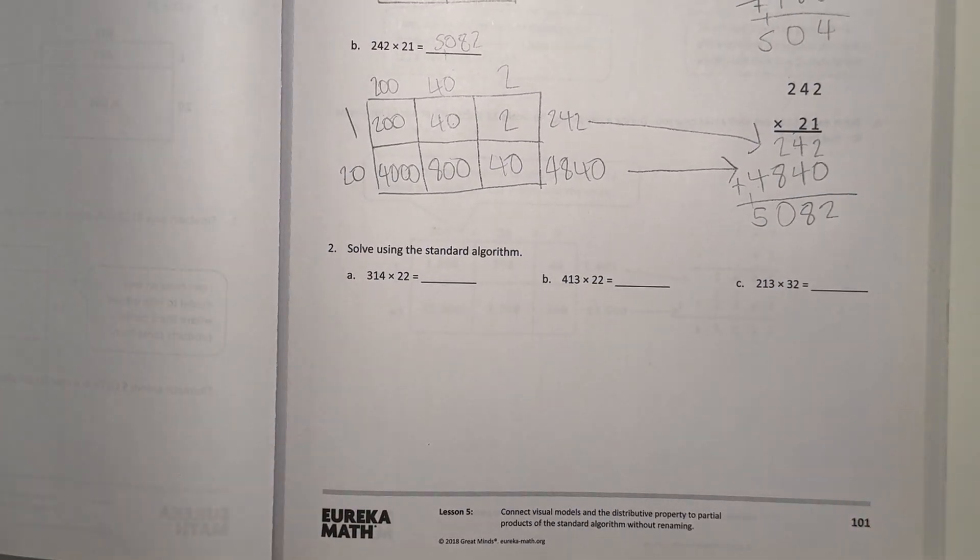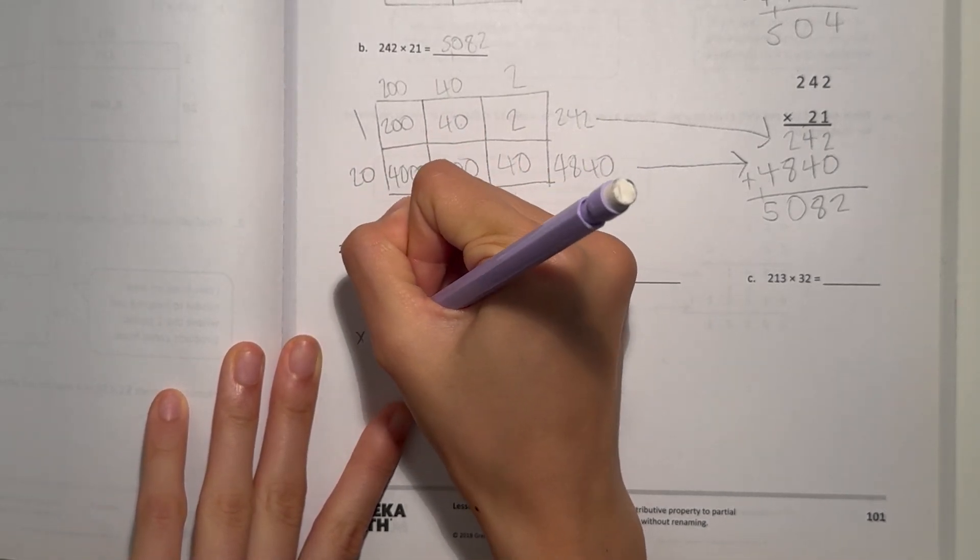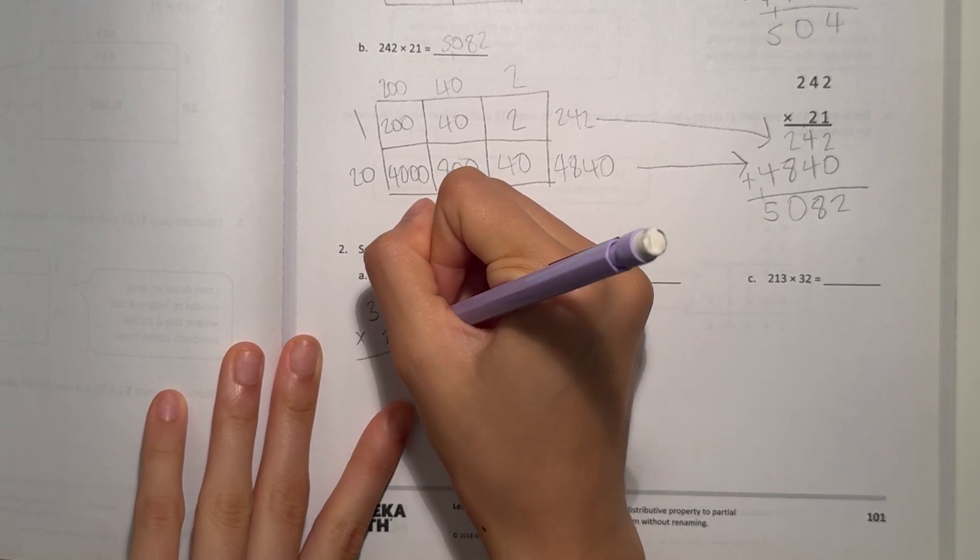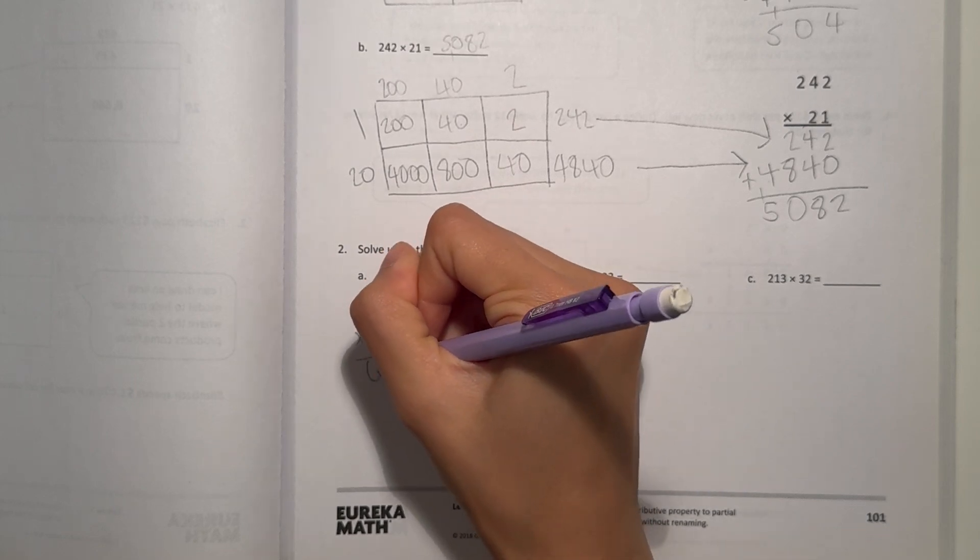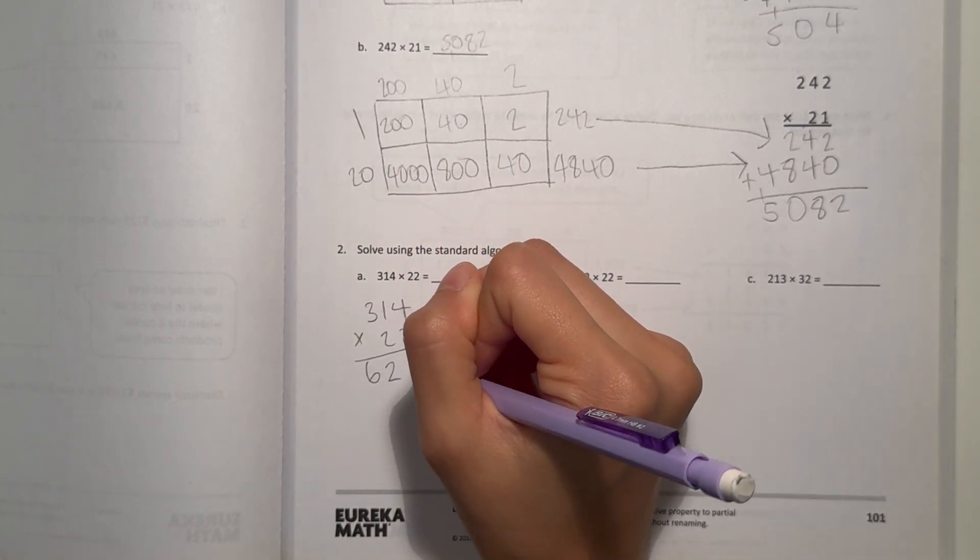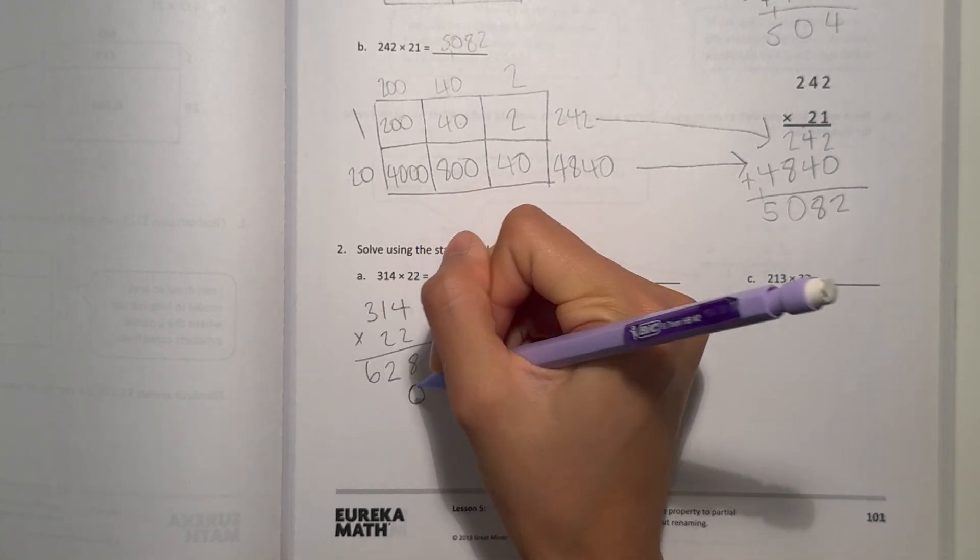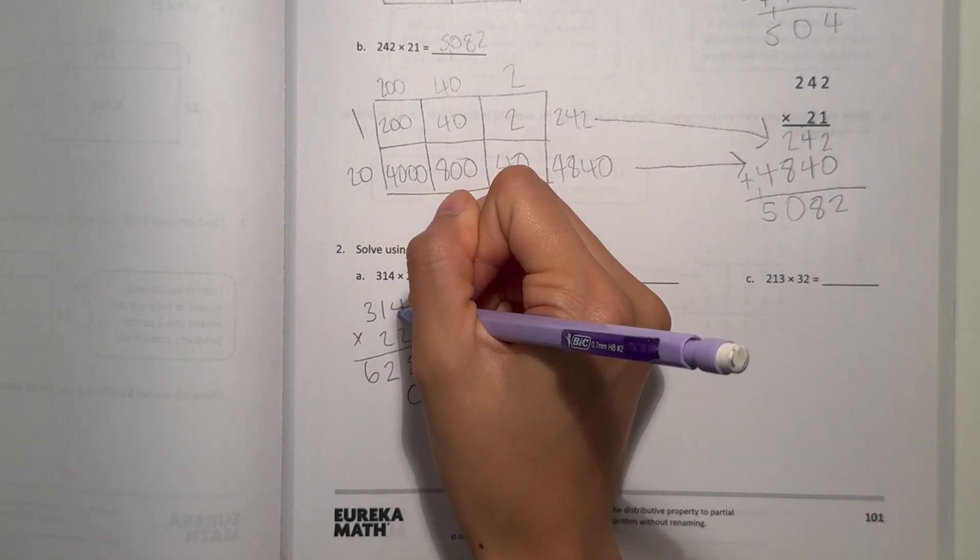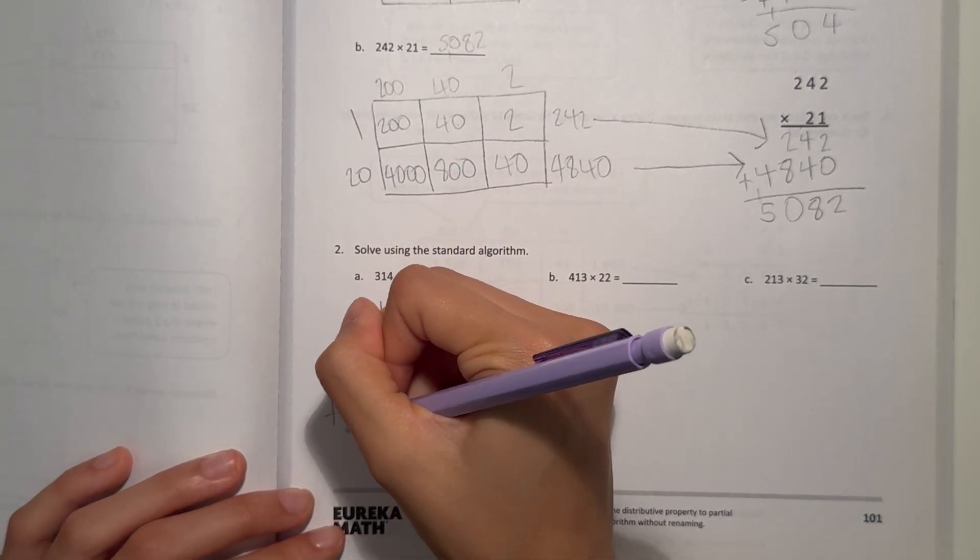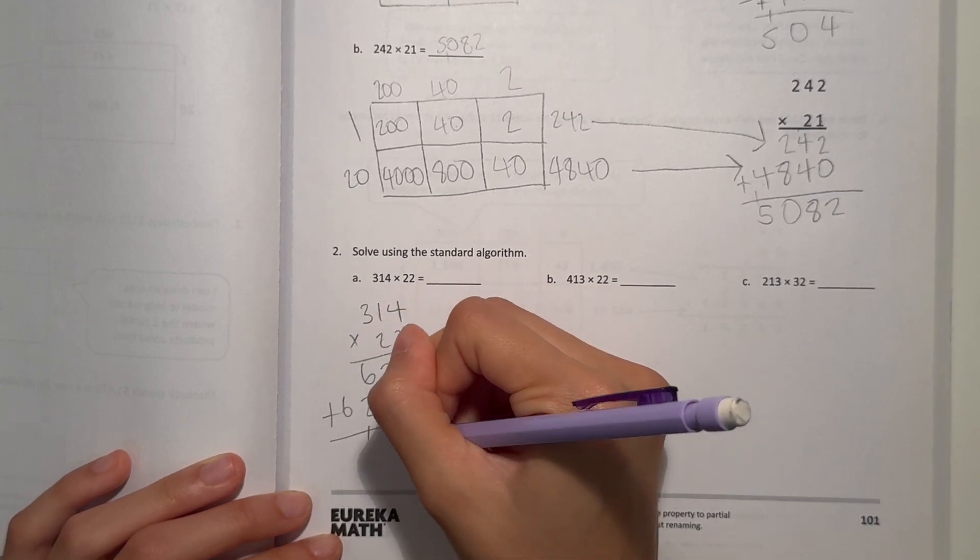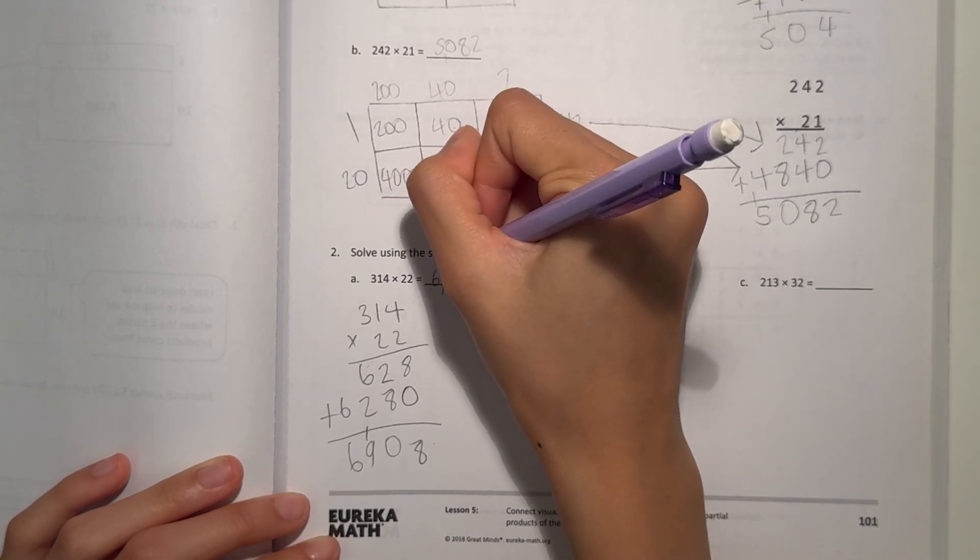Number 2. Solve using the standard algorithm. 314 times 22. Let's look at those 2 first. 4 times 2 is 8. 1 times 2 is 2. And 3 times 2 is 6. Now we look at the next 2, the 20. Very important to remember to add a 0 at the end. 4 times 2 is 8. 1 times 2 is 2. And 3 times 2 is 6. So now let's add. We have 8, 10, 9, 6. Now our answer is 6,908.